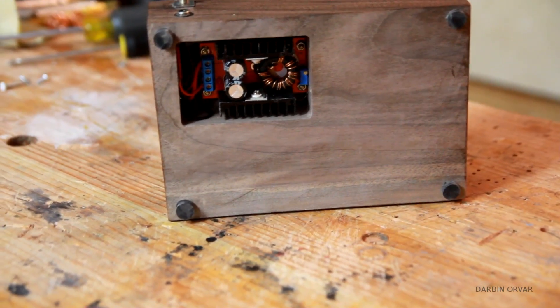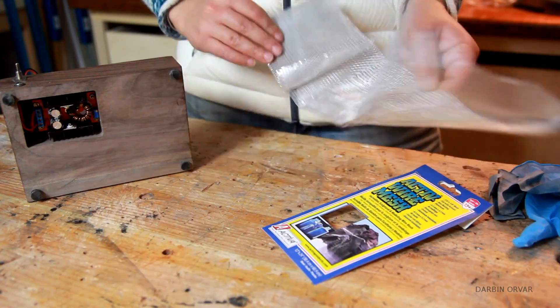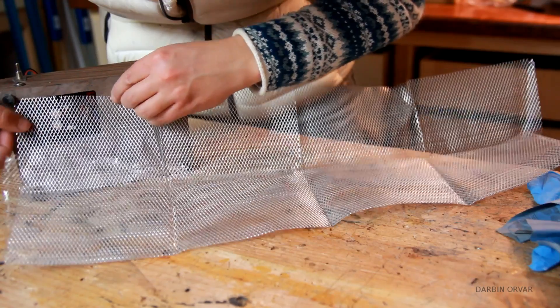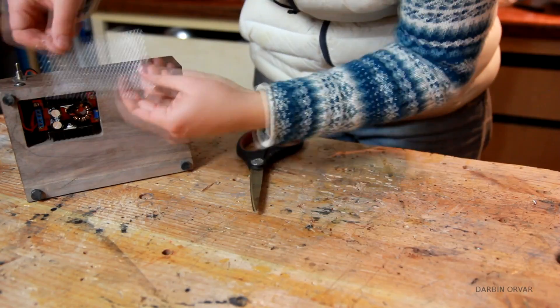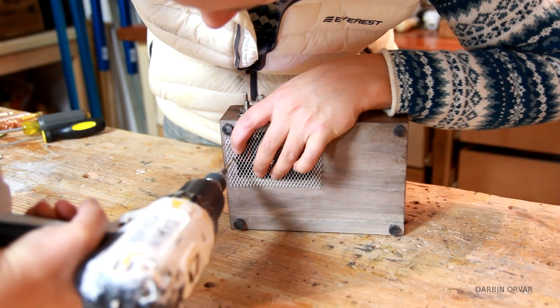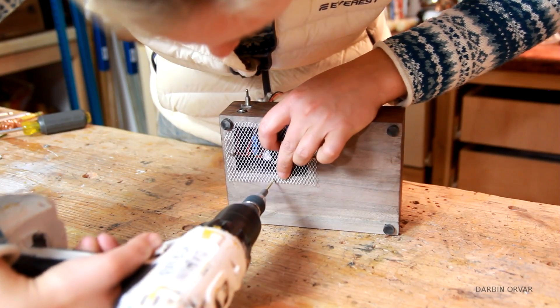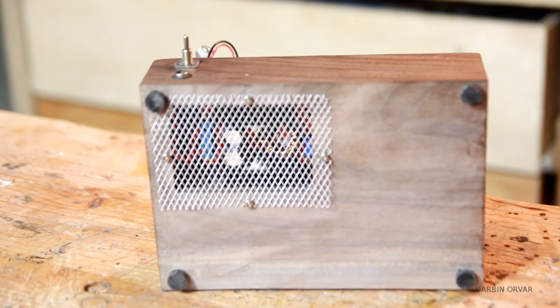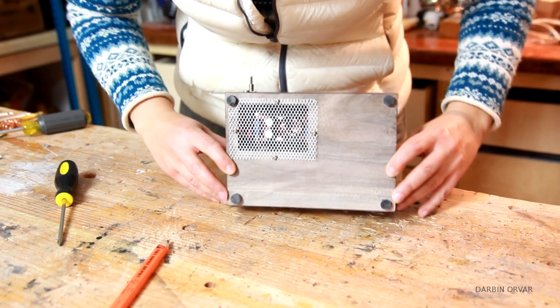Now for the underside all the electronics are exposed so I want to add some protection. Yet to have plenty of airflow so I picked up some fine wire mesh at the craft store. So cutting to size and then just attaching with a couple of small screws. And that looks good.